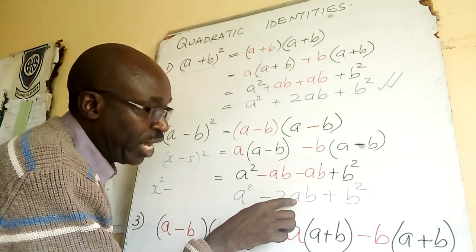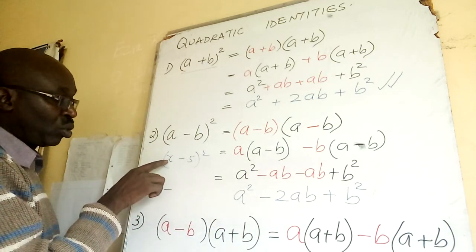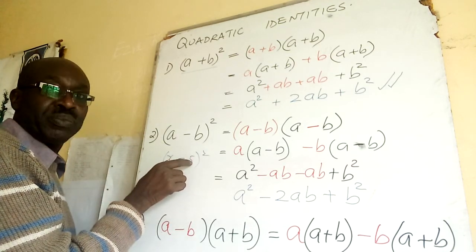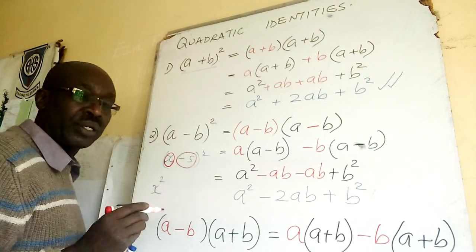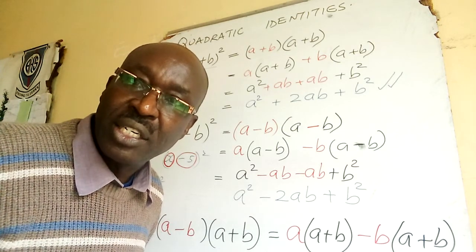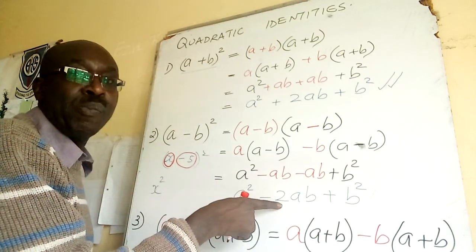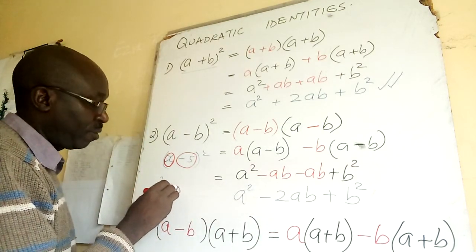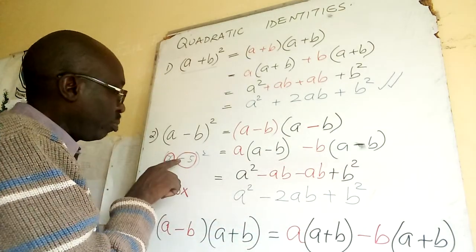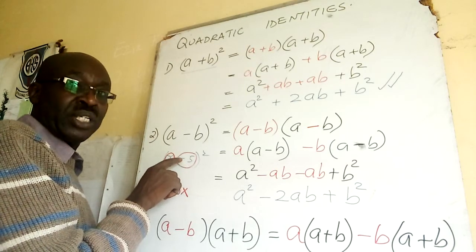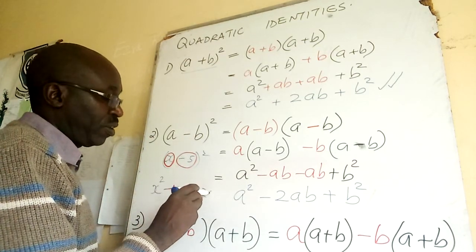Then you are told 2 times a times b. a times b, a times b is -5x. So that's how I get -10x. Then I come here, I'm told the last term you squared. So my second here, this is my b. What is -5 times -5? You get plus 25. So this is your answer.